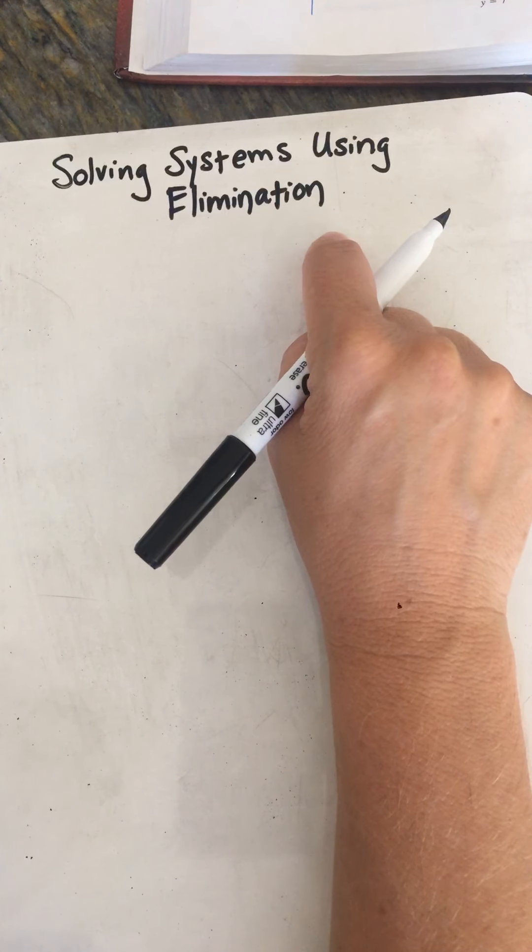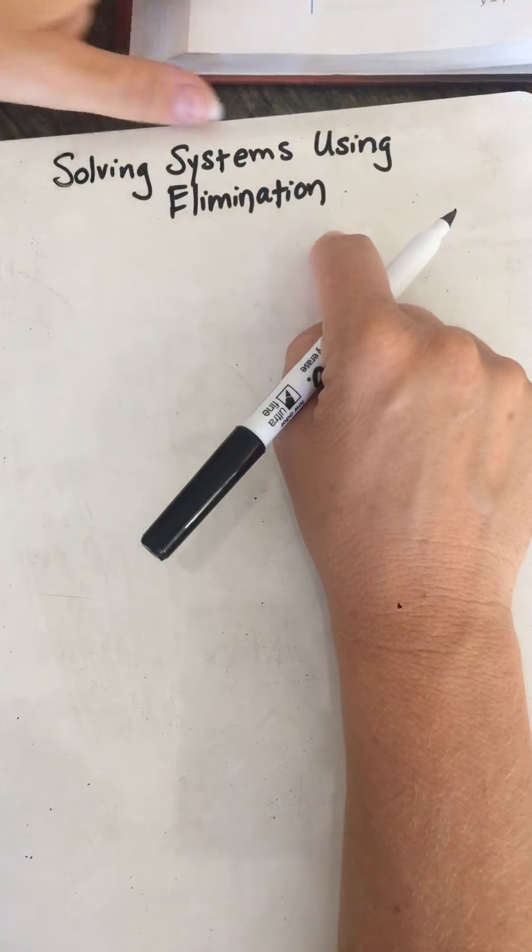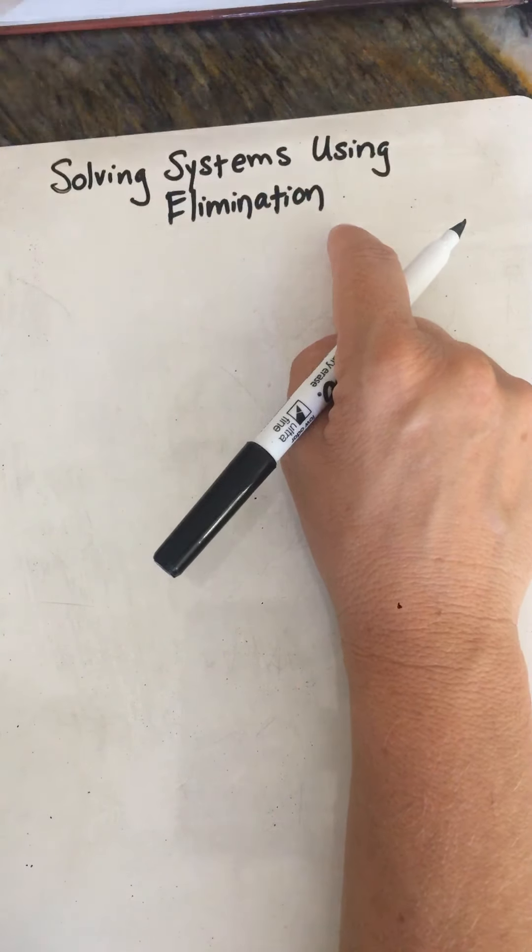So the third way of solving a system of equations is using the elimination method. Your textbook from two years ago used the term linear combination. Elimination is actually a more common term. I kind of like it a little bit better. I don't know, it just sounds a little more violent. Elimination.